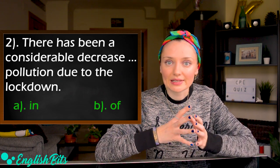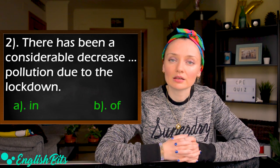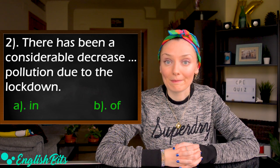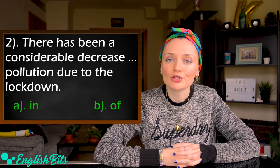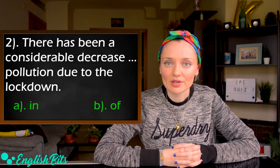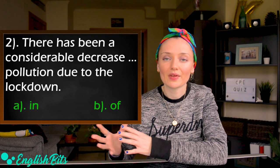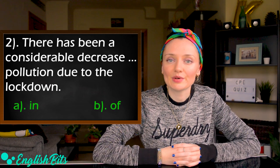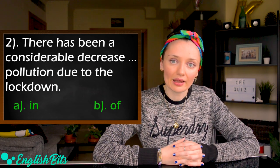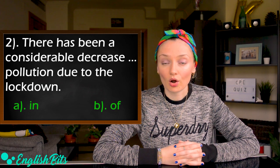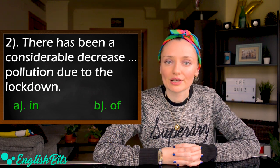Sentence number two: There has been a considerable decrease — A) in, or B) of — pollution due to the lockdown. Choose A or B.